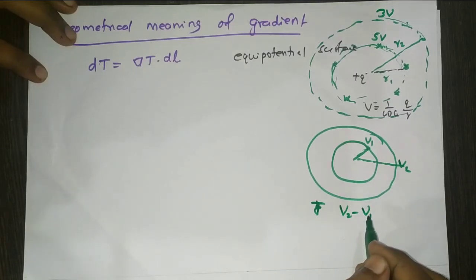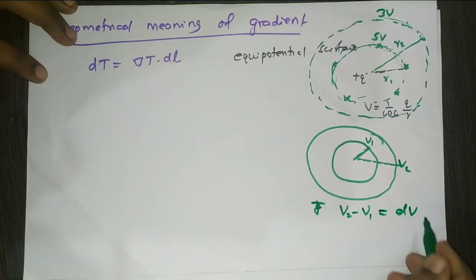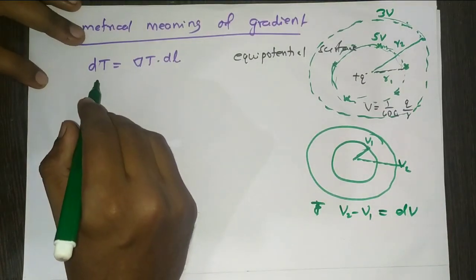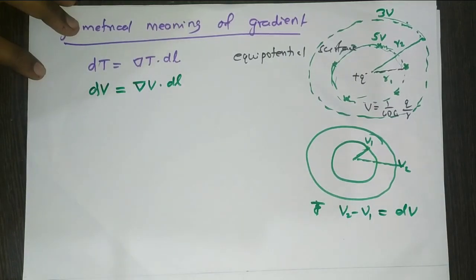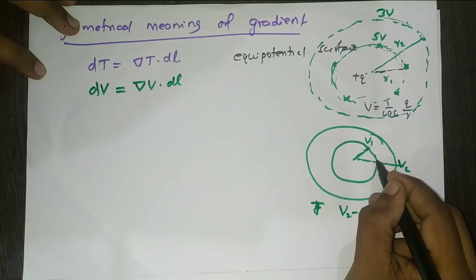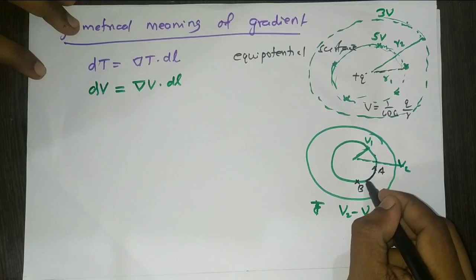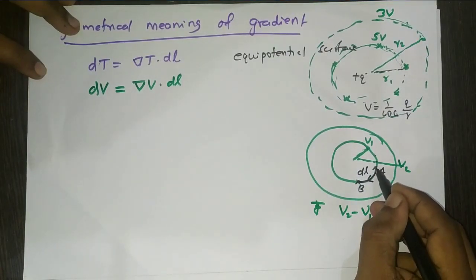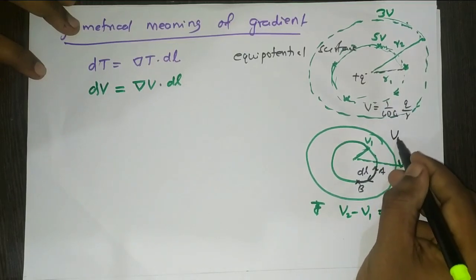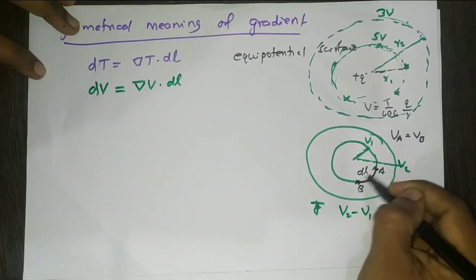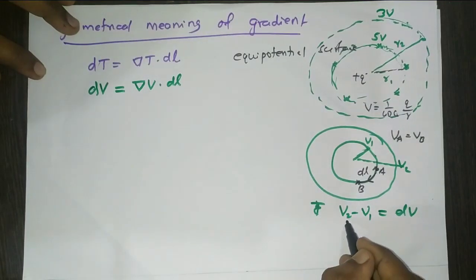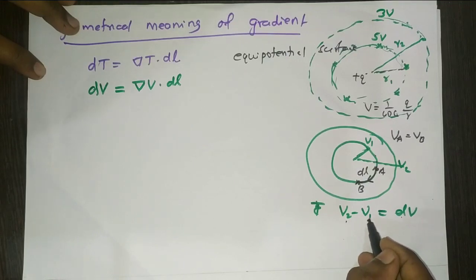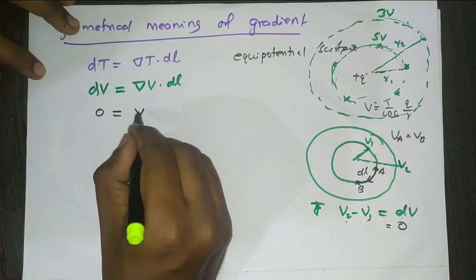We have dV = del V · dl. Consider two points A and B, with displacement dL between them lying on the same equipotential surface. Since both points have the same potential, Va equals Vb, the change in potential dV equals zero. Because they are on an equipotential surface, dV = del V · dl = 0.